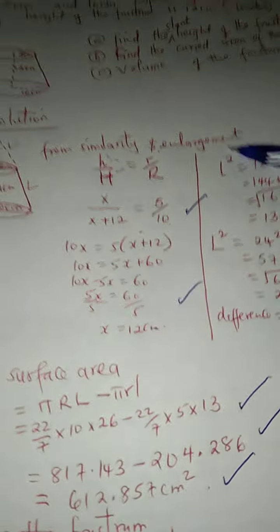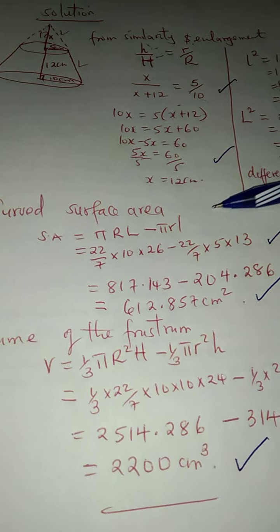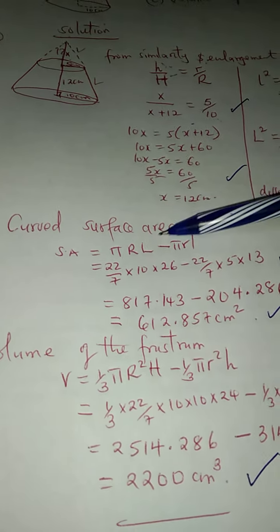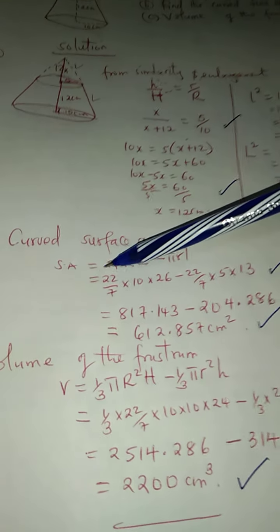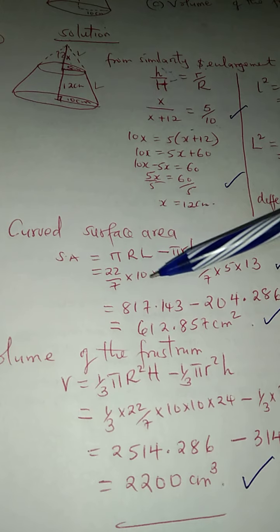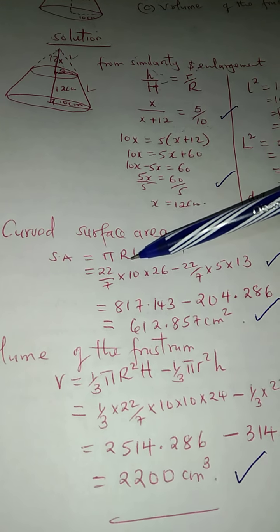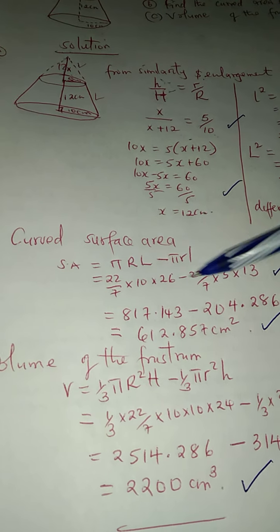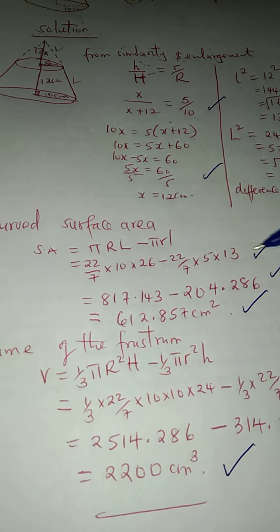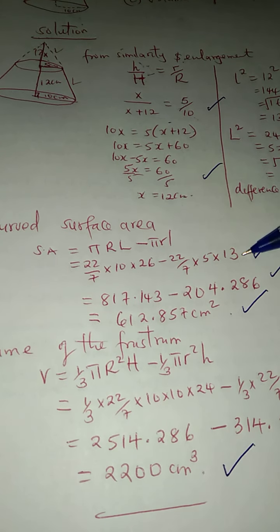Once you've got these things on the upper part, the equation is very easy now for you. Calculate the curved surface area of the frustrum. It is there on your logbook. You will see that is πRl minus πrl. Small l you have, bigger l you have. So your work is just to substitute. 22 over 7 times 10 times 26.